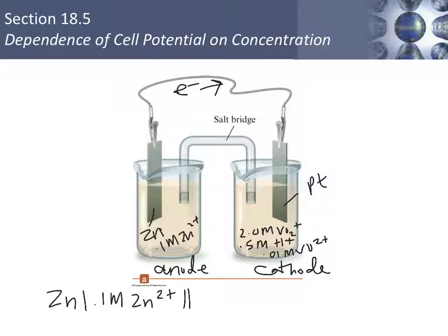And then for our line notation, the anode on the left with the zinc metal and the zinc ion showing the concentration. And then for the cathode, all of those different ions in solution with their concentration, and then at the end, the platinum electrode.